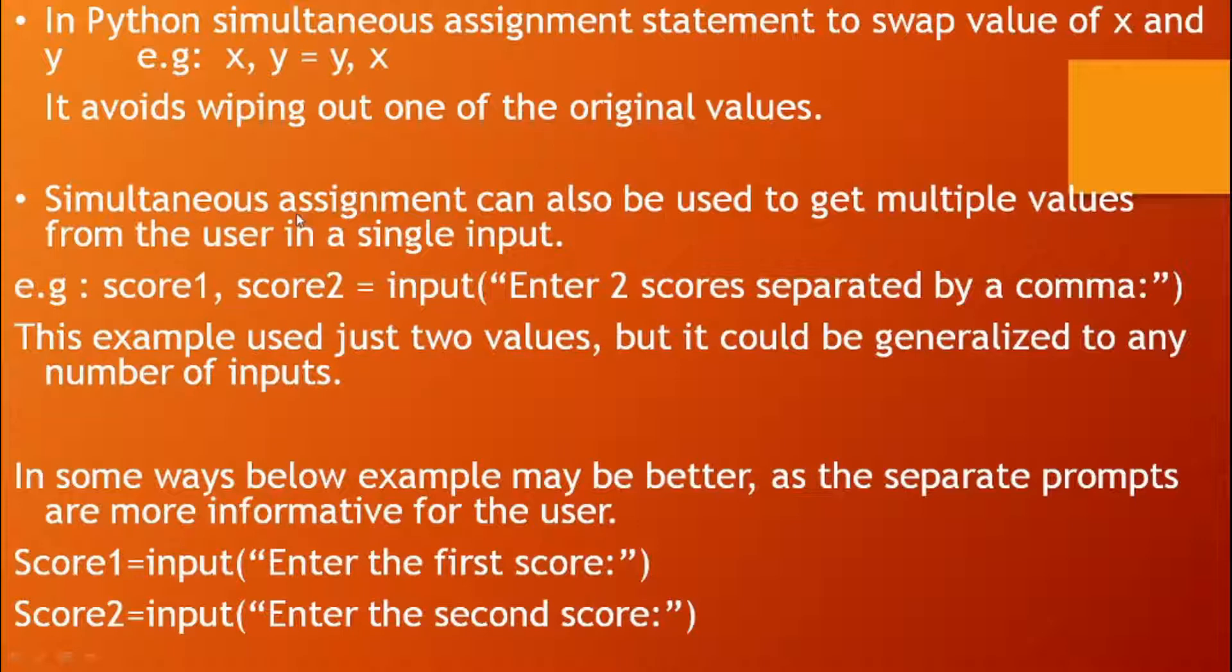Simultaneous assignment can also be used to get multiple values from the user in a single input. See the example: score1, score2 equals input enter two scores separated by a comma. This example uses just two values, but it could be generalized to any number of inputs. In some ways, the below example may be better as the separate prompts are more informative for the user.